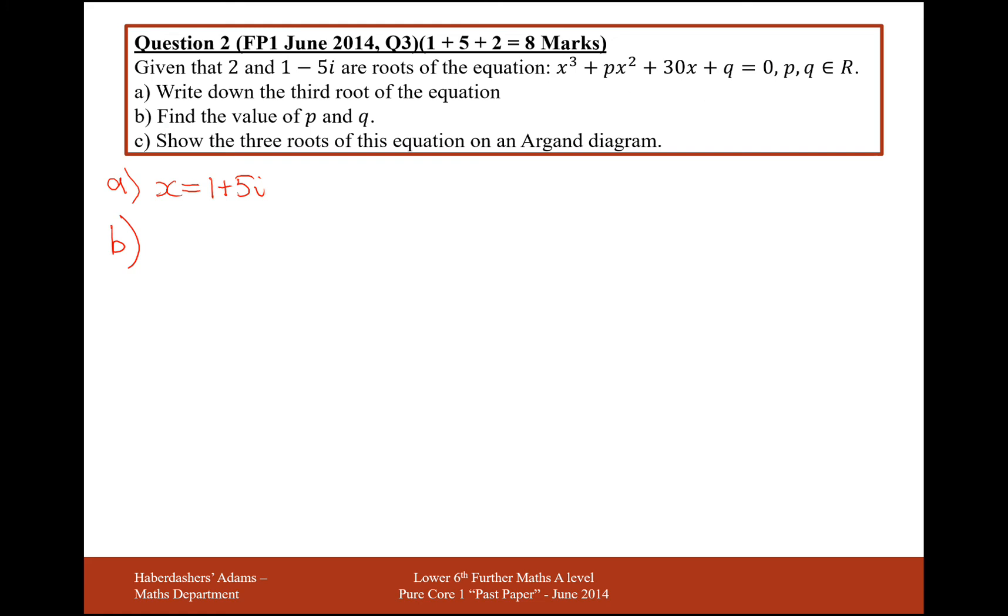Find the value of p and q. Right, okay, well I know that for p, I can work this out by adding together all of my roots. Or it's going to be p is minus b over a. So the formula is sigma alpha equals minus b over a. This is my value for b here, this is my value for a here.